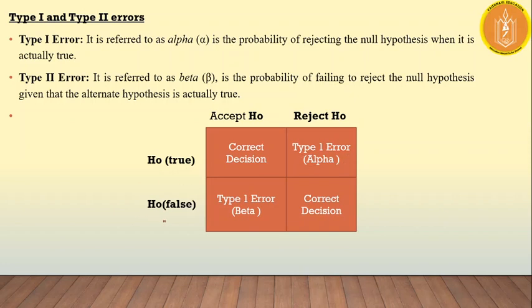On the other hand, if H0 — the null hypothesis — was false and we accepted the null hypothesis, that is our Type 2 error, which we call beta error. If our null hypothesis was false and we rejected it, that is the correct decision.